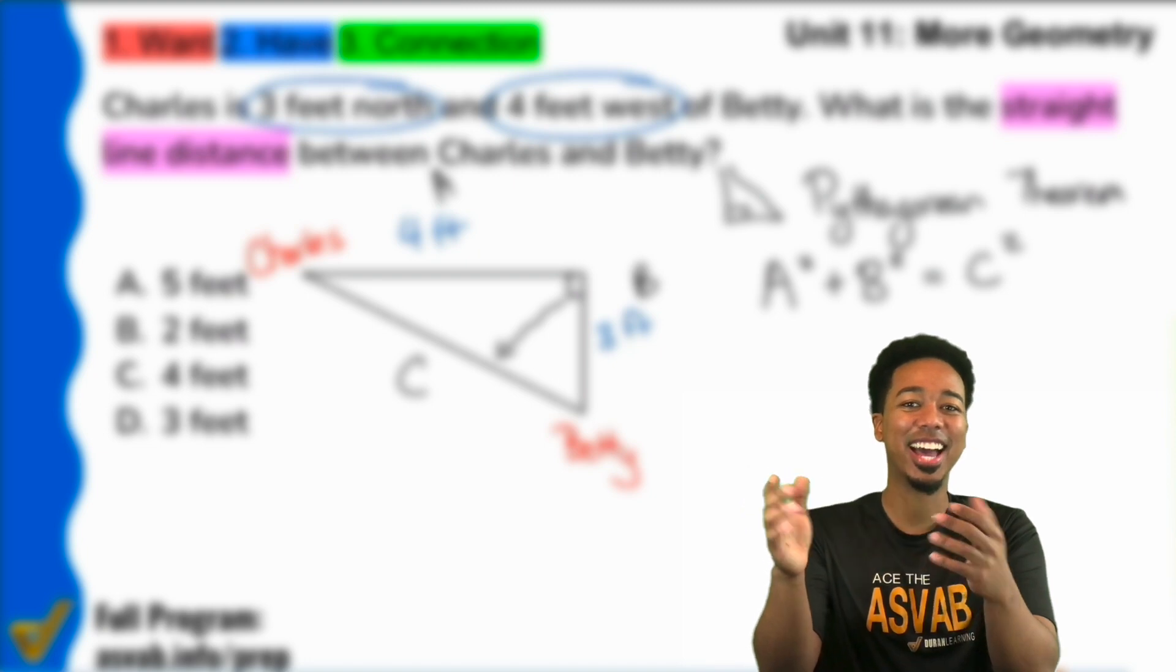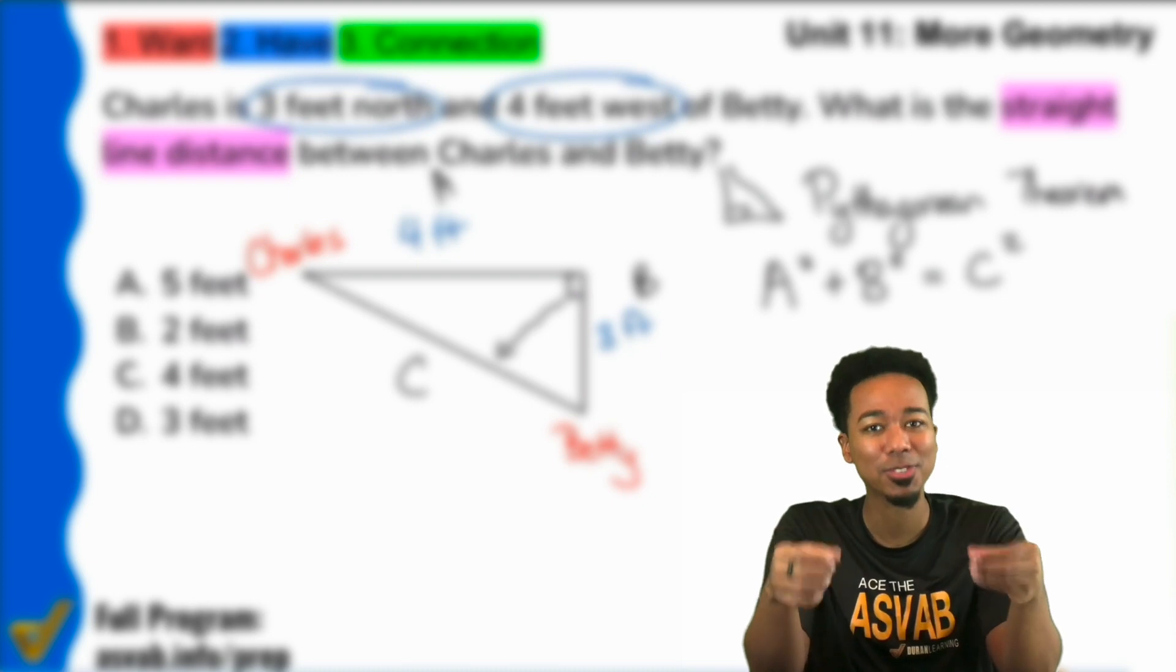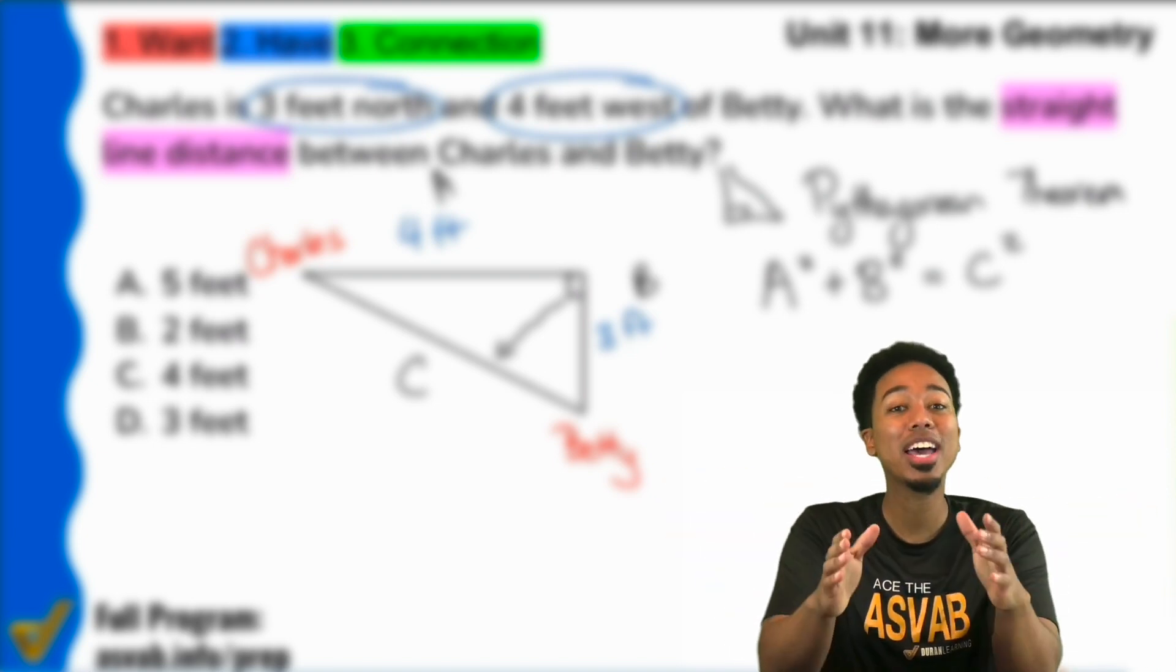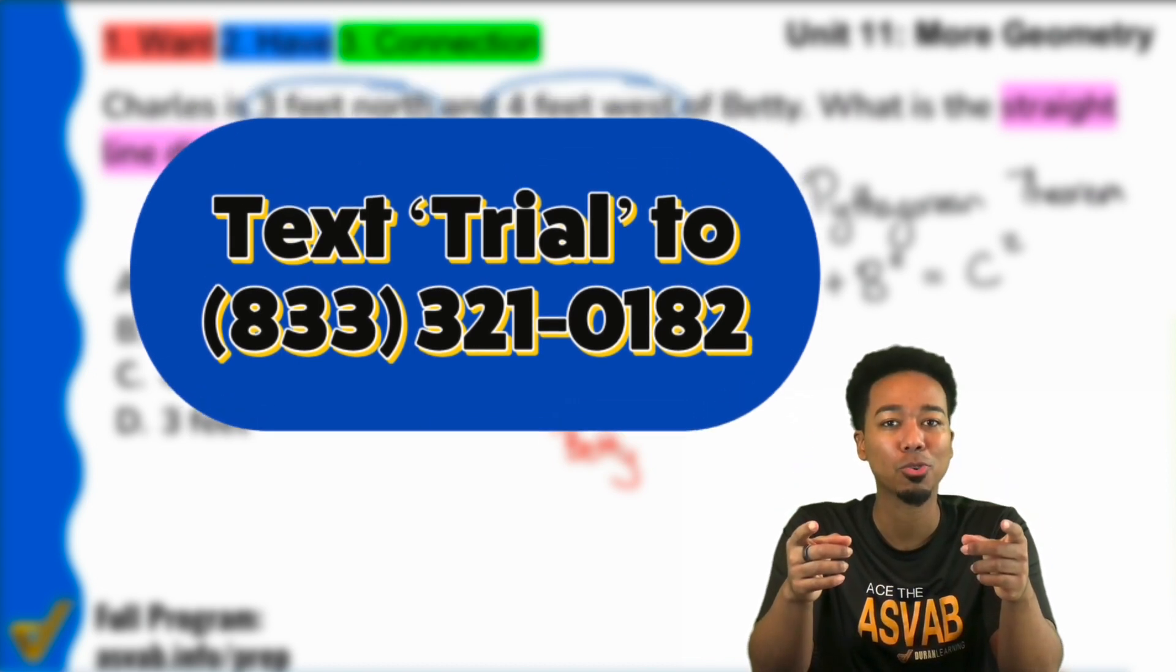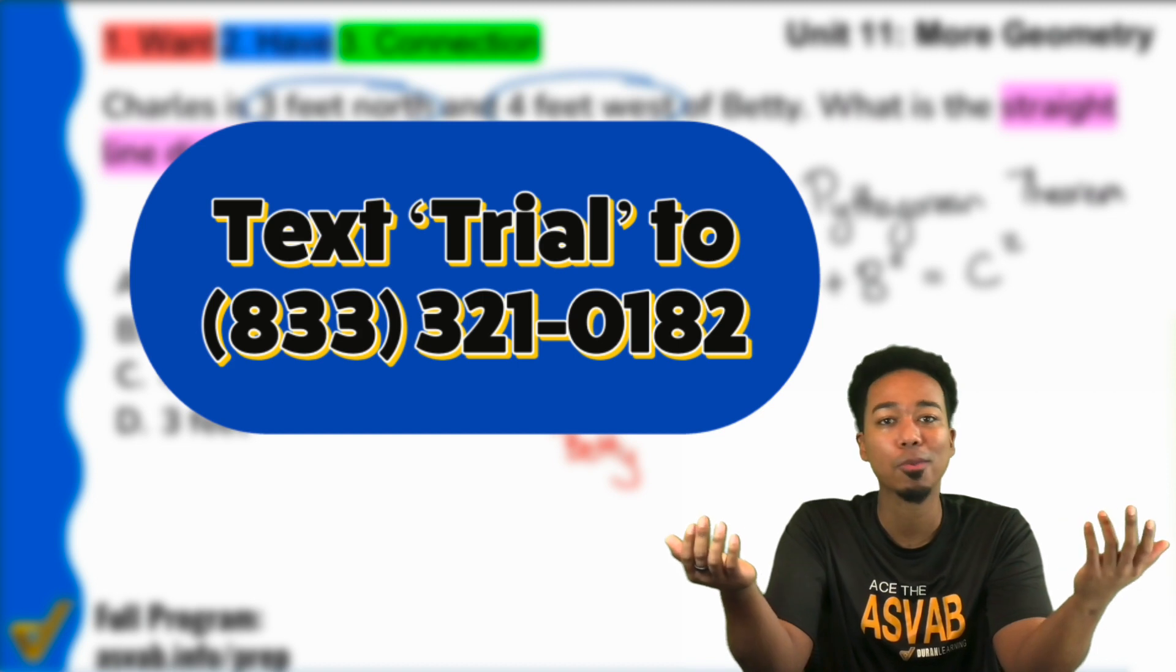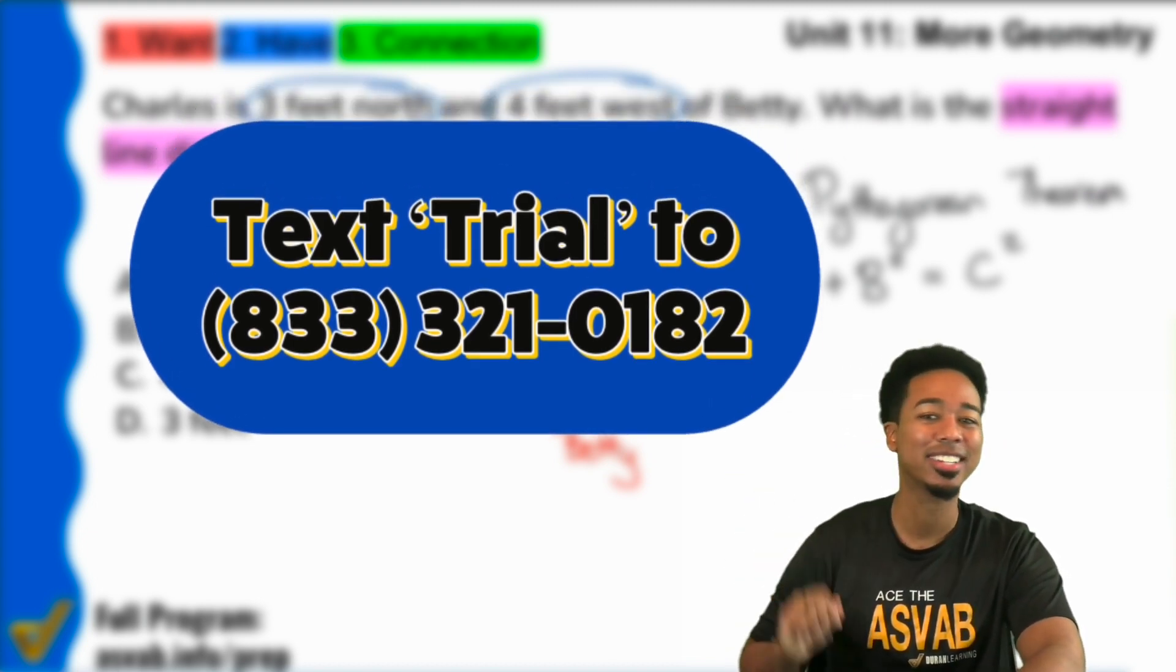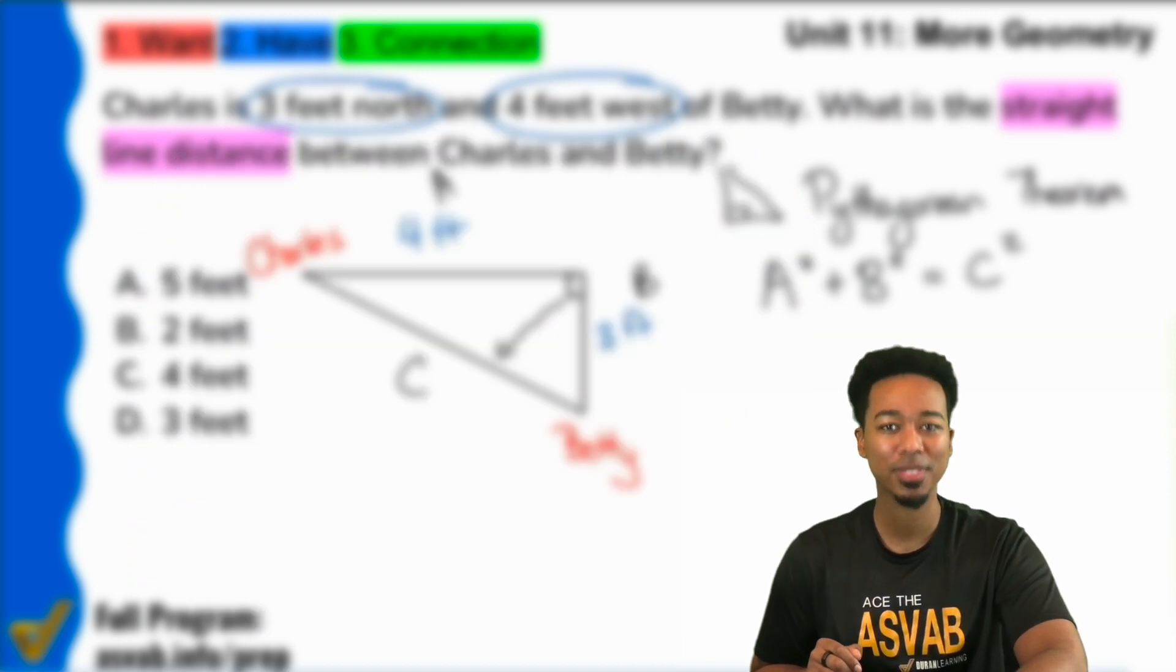And look, I know how awesome it is to watch these videos. But how much better would it be to actually sit in a live Zoom class with me, being able to answer your questions and show you how to get things done back to back to back? I got your back. Go ahead and join our program trial. It's free for a full week. I am so confident that it'll help you raise your score that I'm not even requiring a credit card for you to sign up. All you have to do is confirm your email and phone number and you're good to go. So what are you waiting for? Go ahead, click the link in the description or text TRIAL to 833-321-0182. And I'll see you there, my ASVAB party people. Let's raise that score.